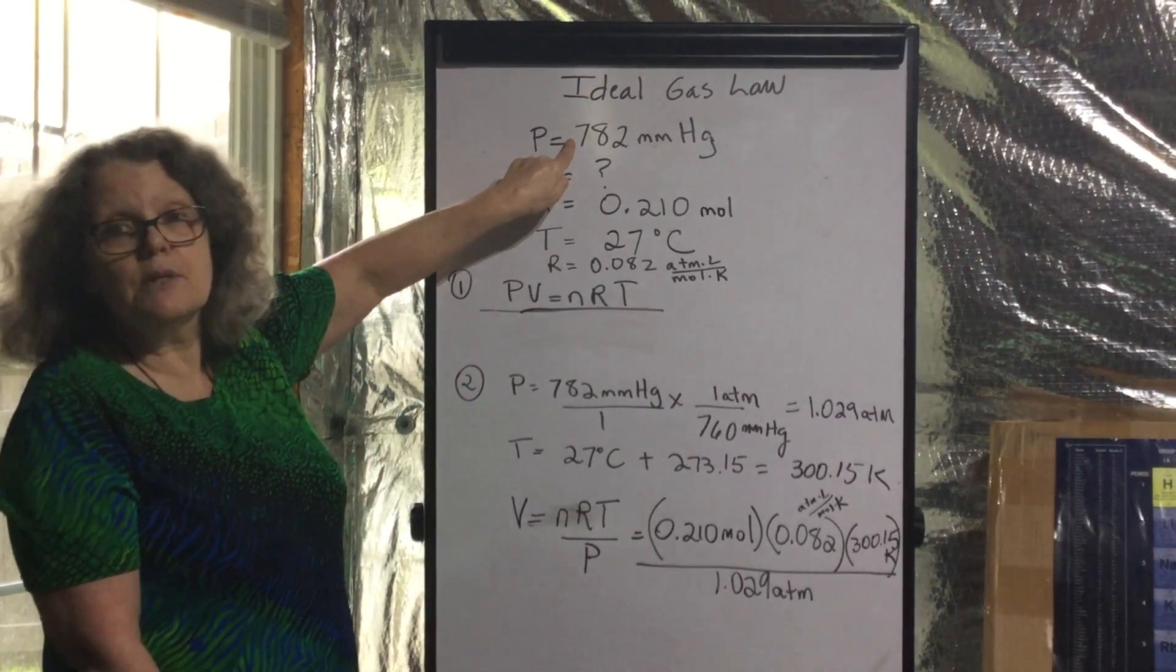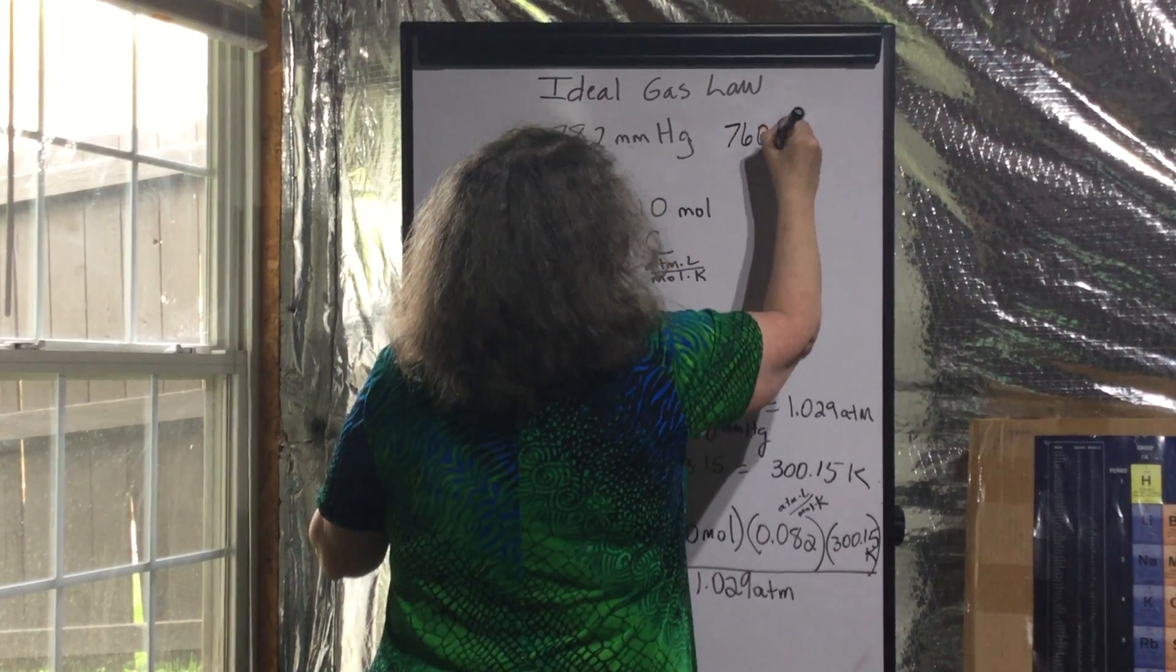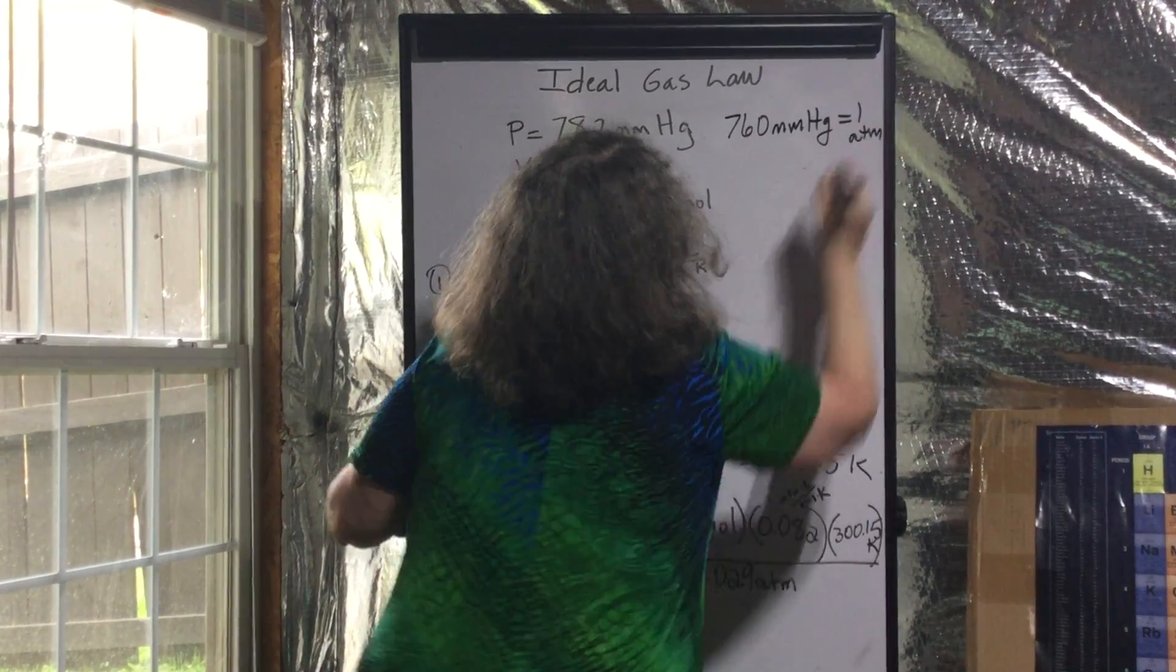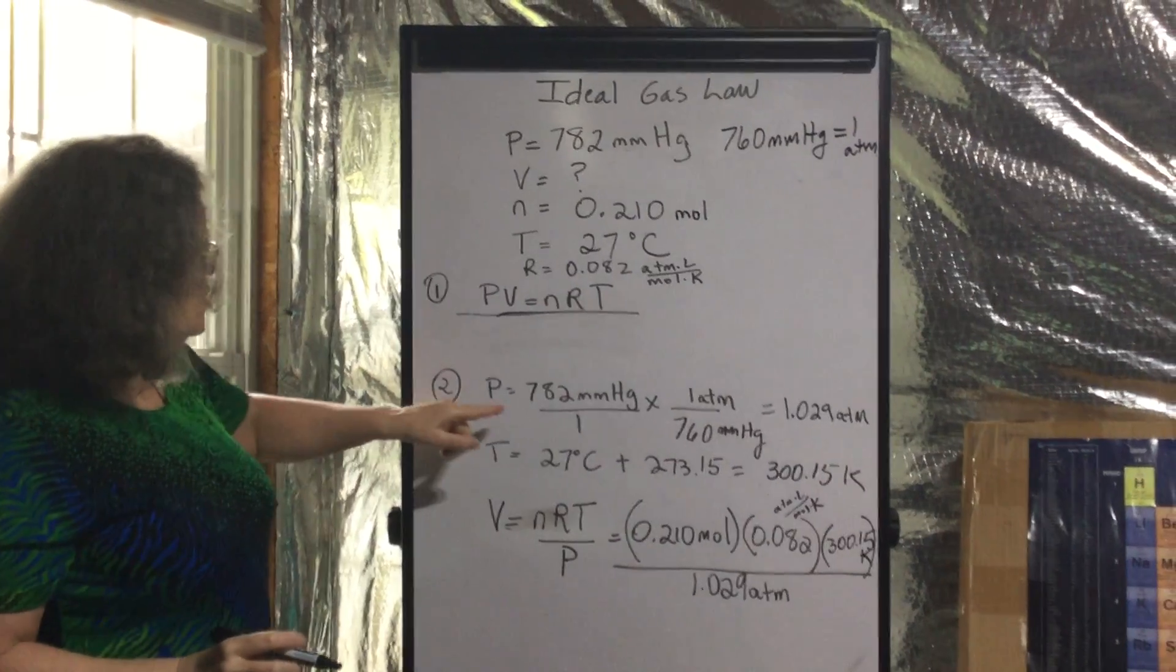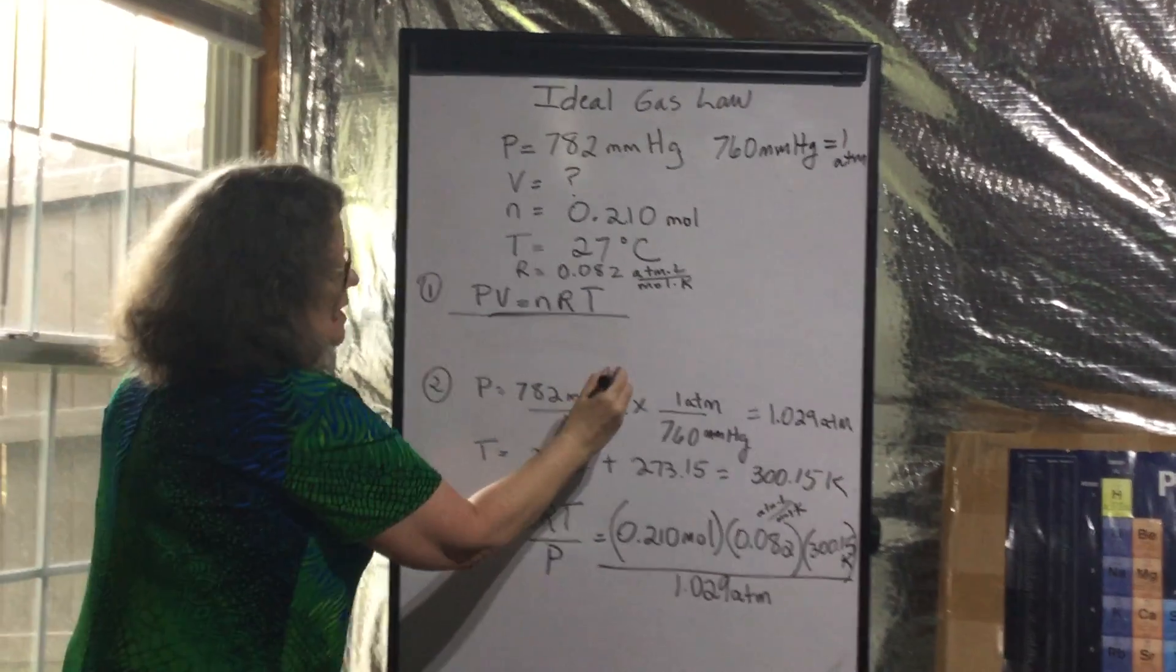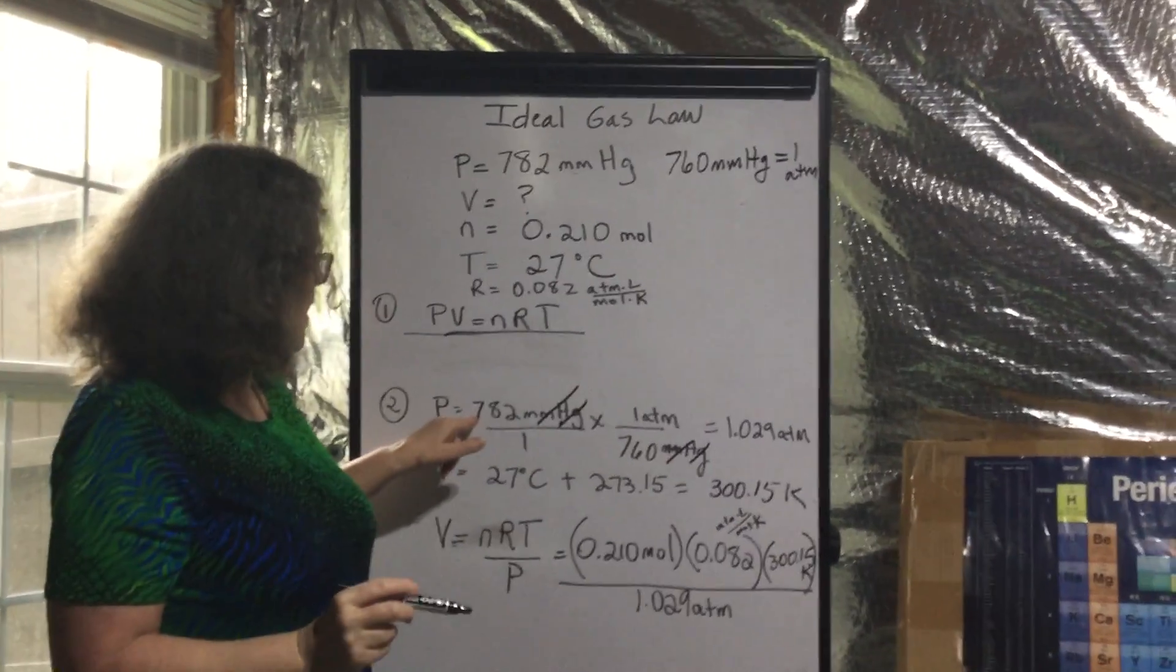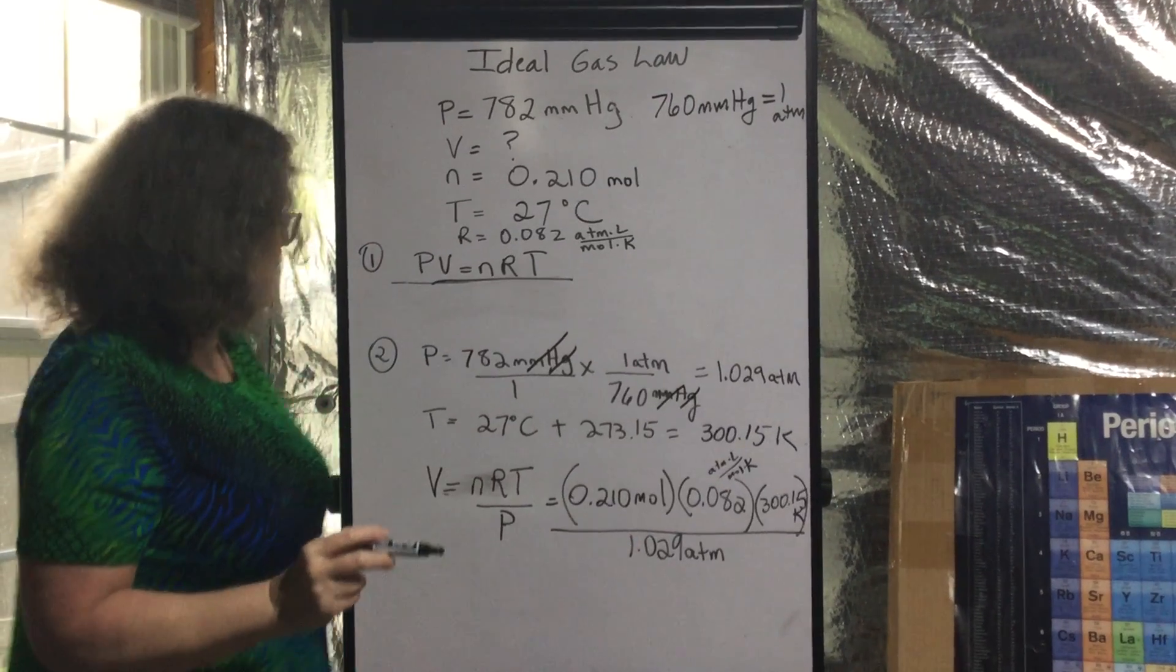So this is in millimeters mercury. There are 760 millimeters mercury in one atmosphere. That's their equivalents. So I have 782, and by doing this I'm going to convert. I'm going to divide 782 by 760. I'm going to get 1.029 atmospheres.